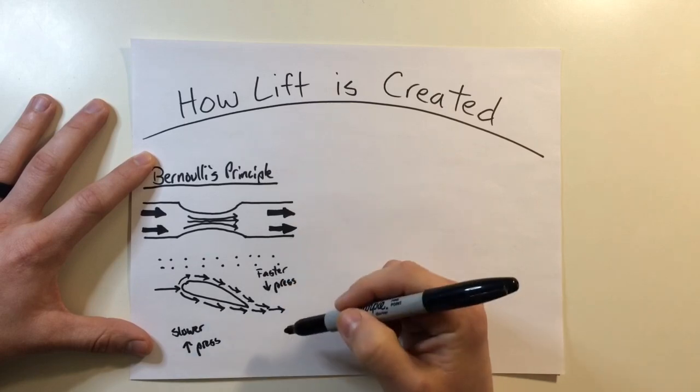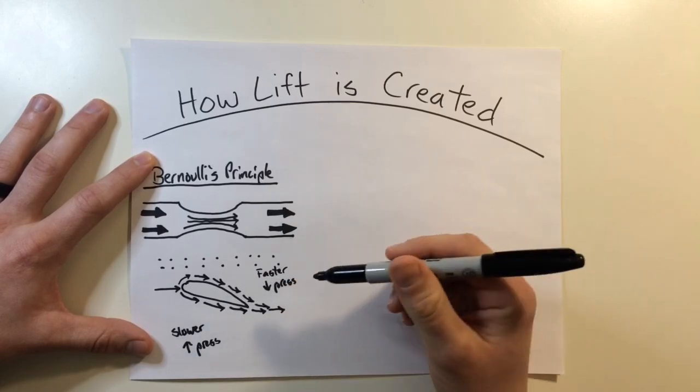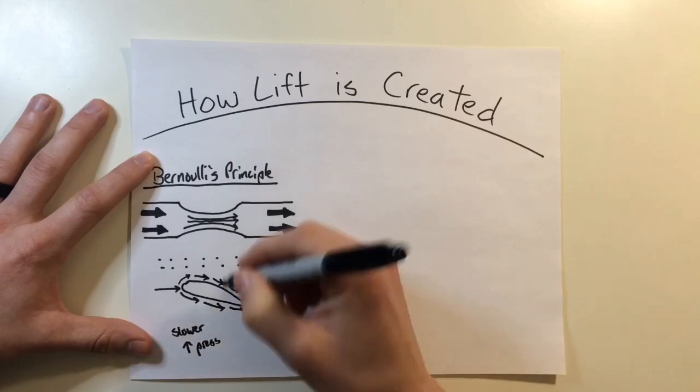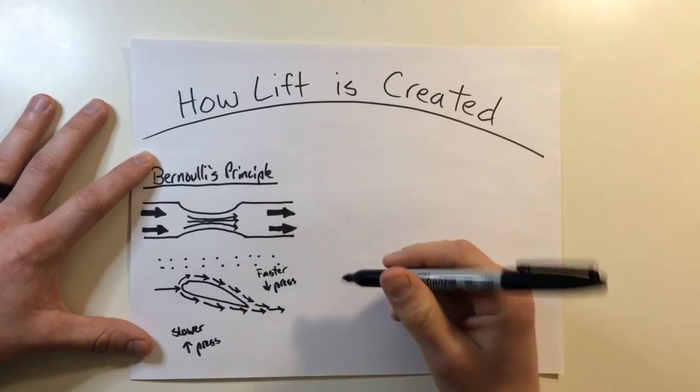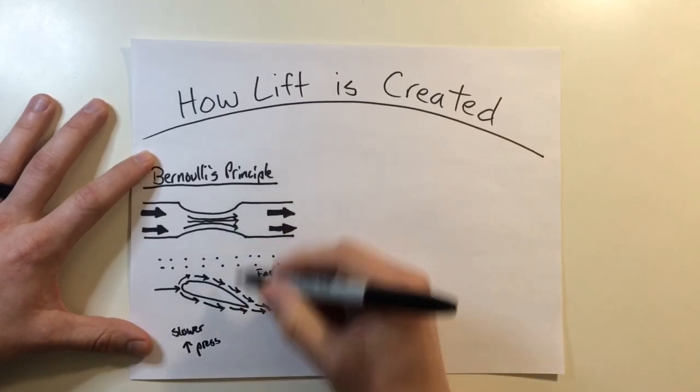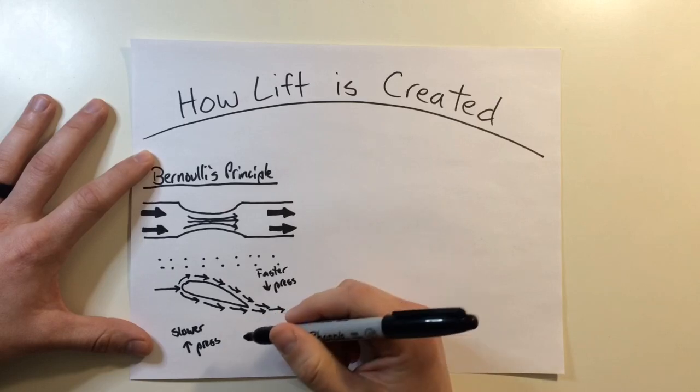The differences in velocities are shown again and again in wind tunnel tests by aerodynamic students all across the country just to prove this concept to get their degrees. So that, in a nutshell, is Bernoulli's principle.